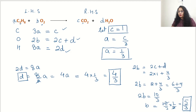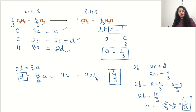Now we put all values A, B, C, and D into the original reaction. In place of A we write 1/3, B is 5/3, C is 1, and D is 4/3. But we never balance with fractions, so we multiply the whole reaction by 3 to clear the denominators.